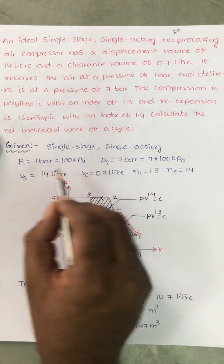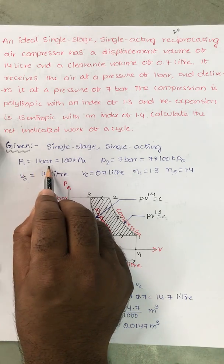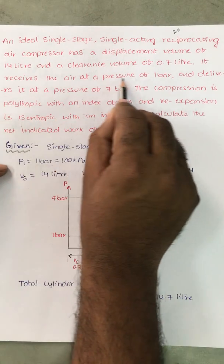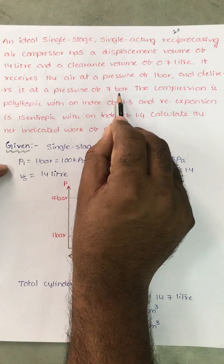Single stage, single acting. P1 is equal to 1 bar, P2 is equal to 7 bar.